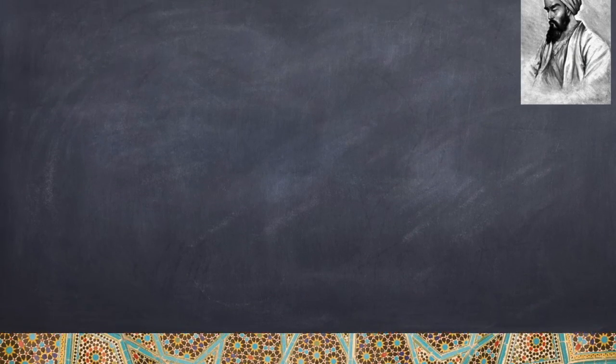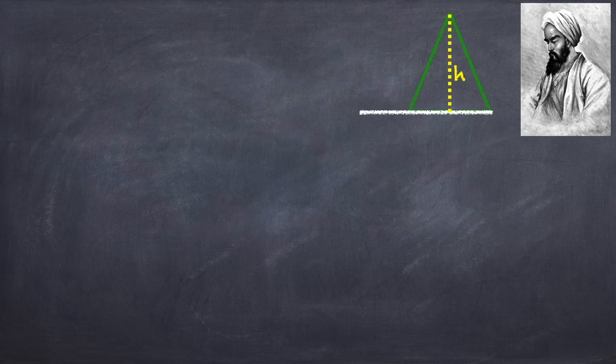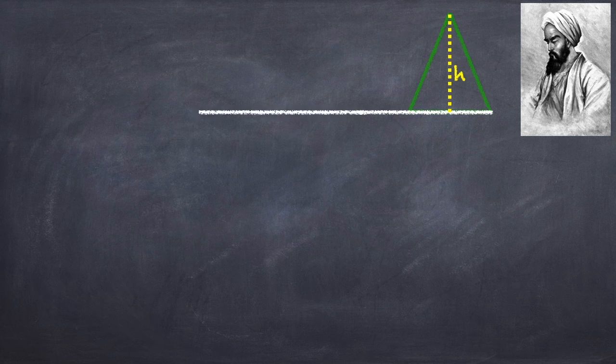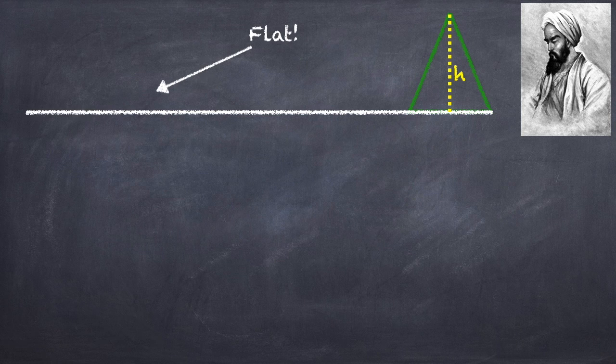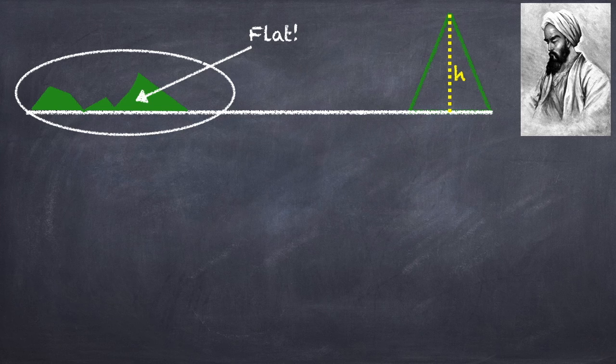So let's take a look at this method. First thing you're going to need to do is measure the height of a mountain. But not just any mountain. You need a mountain that's overlooking a flat expanse of land. And more precisely, you have to be able to see the horizon. So if you've got any mountains or hills in the way, that's not going to work.